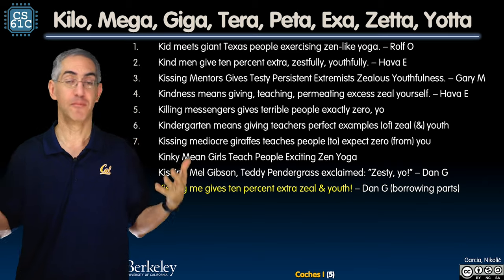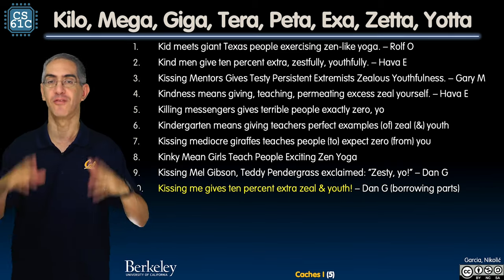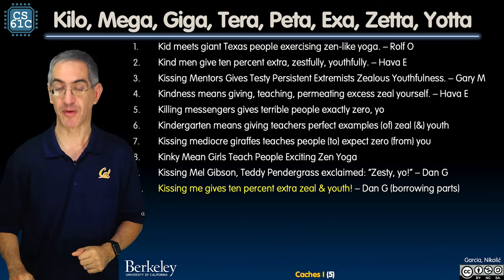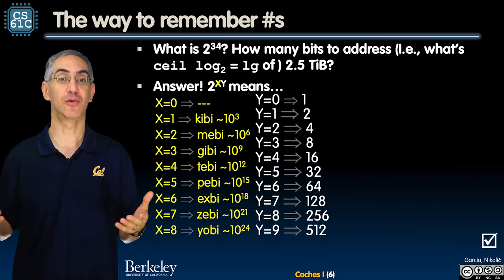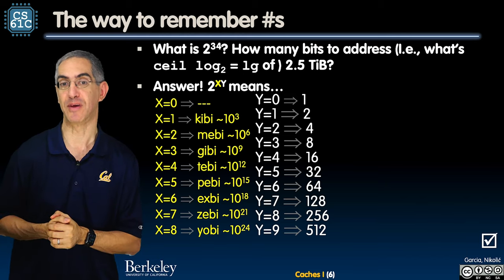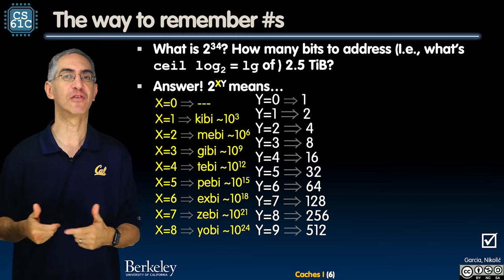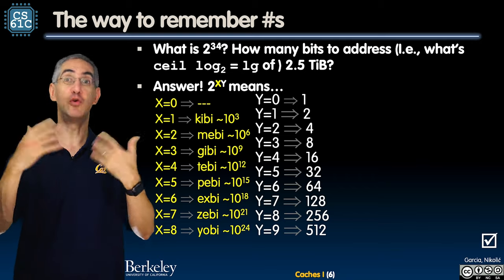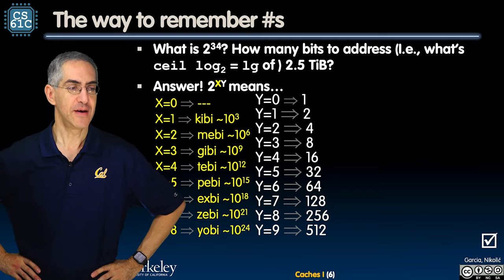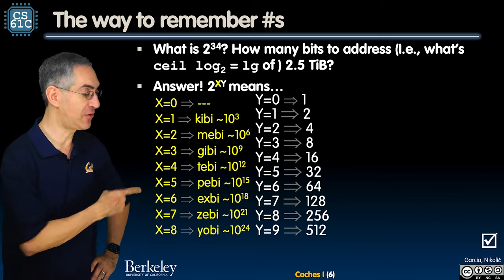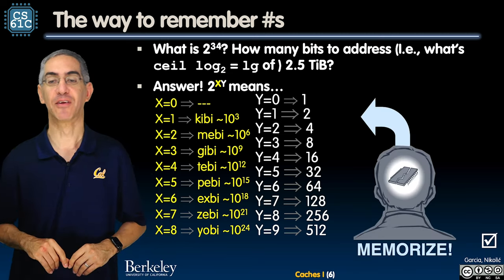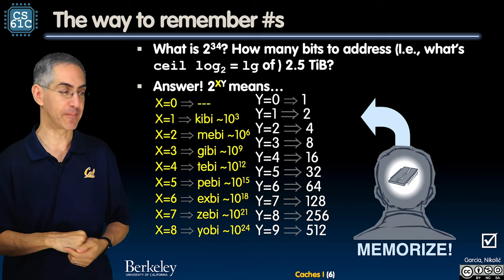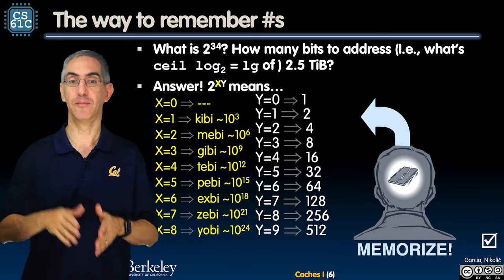Pick one of these mnemonics or make your own. Exams may be closed book in the future, so memorize this sequence. For example: what is 2 to the 34, and how many bits do you need to address 2.5 tebi bytes? To answer these quickly, memorize two tables. Think of 2 to the XY where X is the tens column and Y is the ones column.